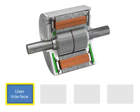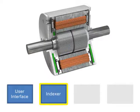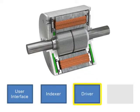The indexer converts the data input from the user interface to motion signals that the motor will turn to a defined position and speed. The driver then takes the data from the indexer and provides current pulses to the motor.